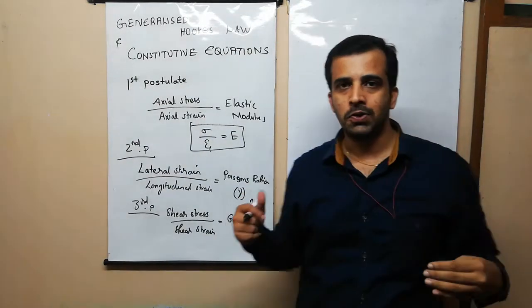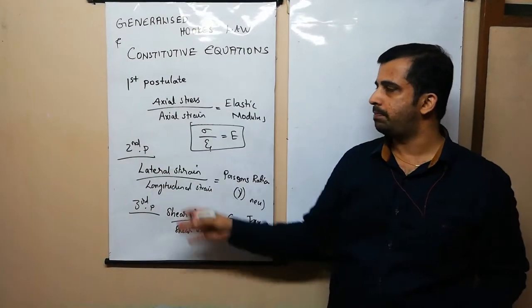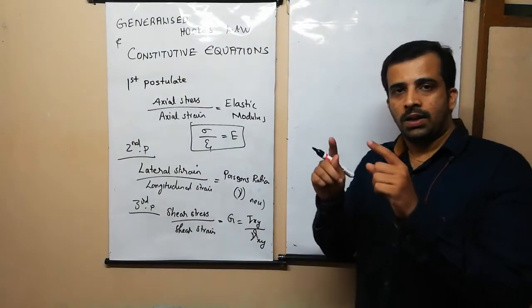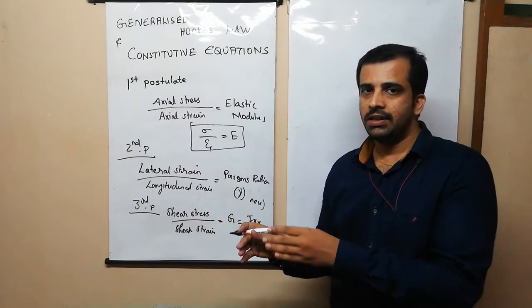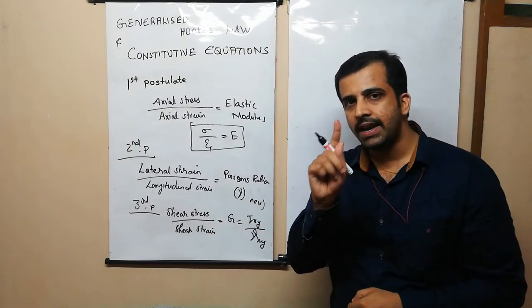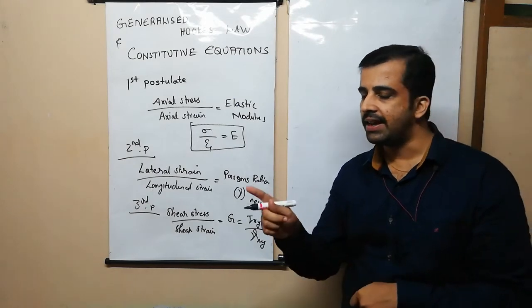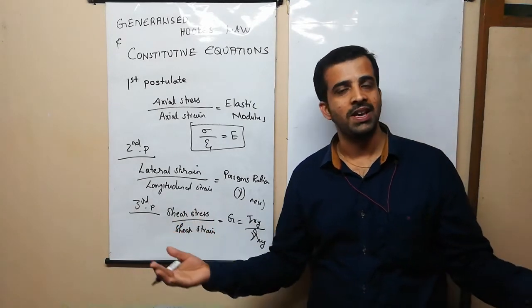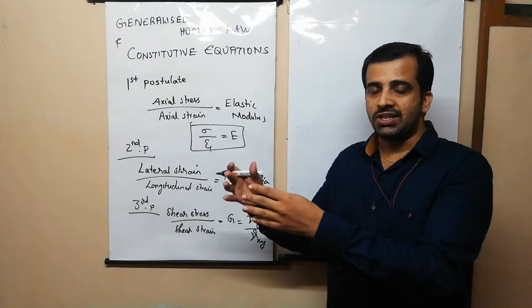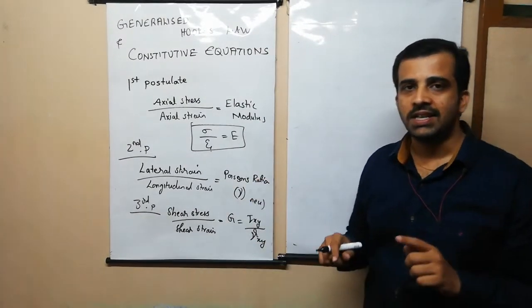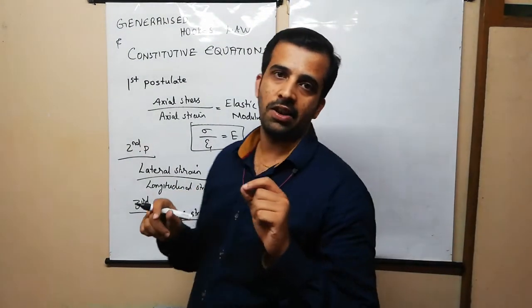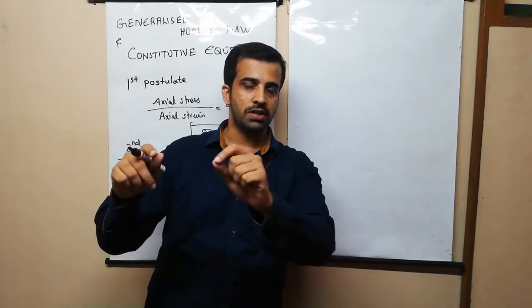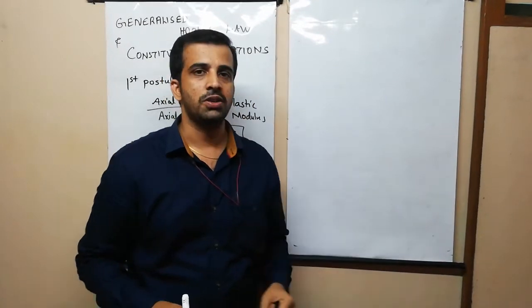Now I am trying to extend these three postulates to relate stress components to strain components. There are totally nine rectangular stress components and nine rectangular strain components expressed in Cartesian coordinates — nine to express the state of stress at a point, and nine to express the state of strain at a point.